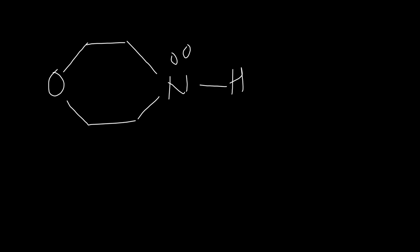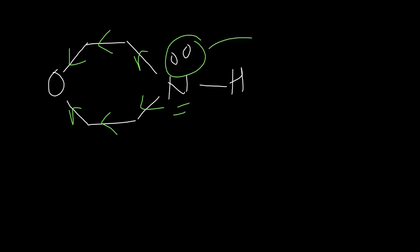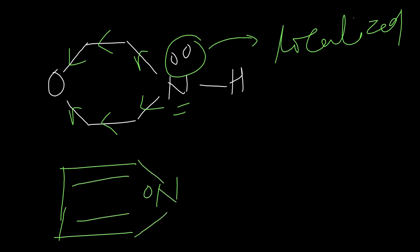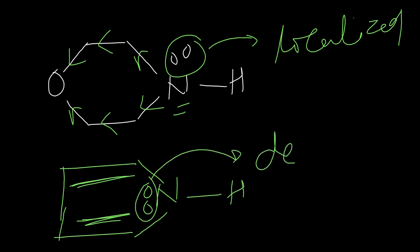What will the oxygen atom do? Oxygen, being more electronegative, will withdraw the sigma electrons of nitrogen. This electron is localized. But in the case of pyrrole, this is very important - the lone pair electrons are taking part in resonance. So they are delocalized electrons.